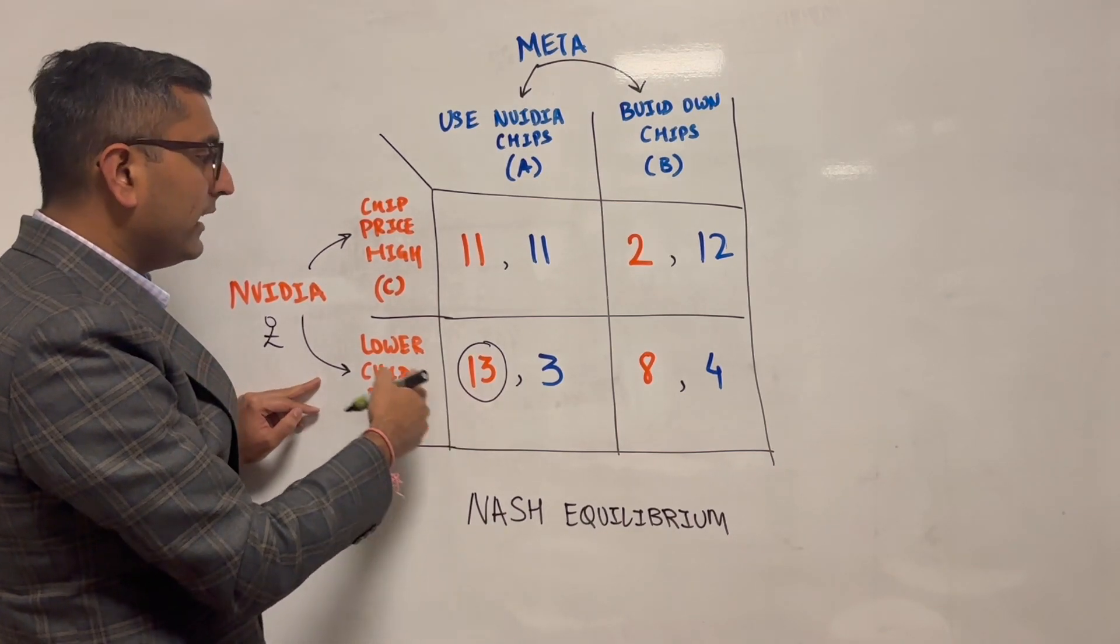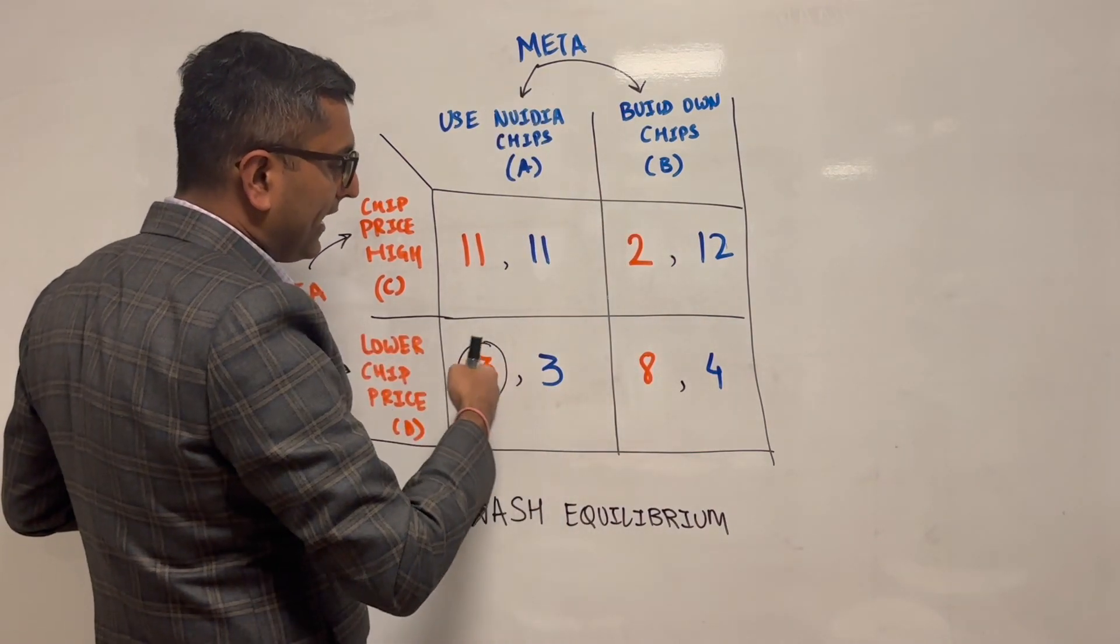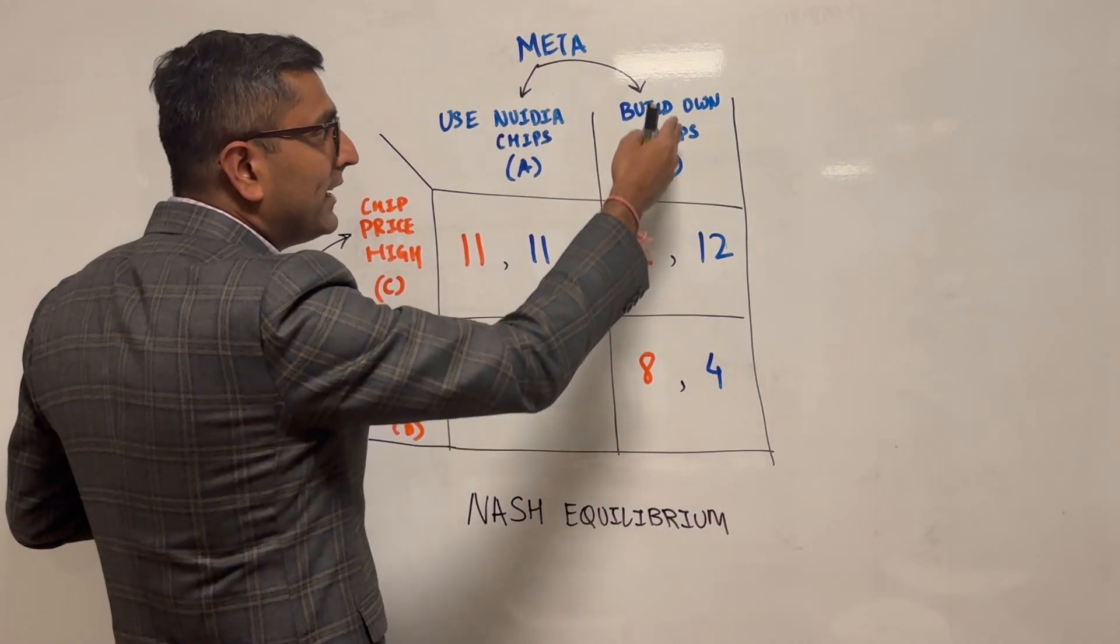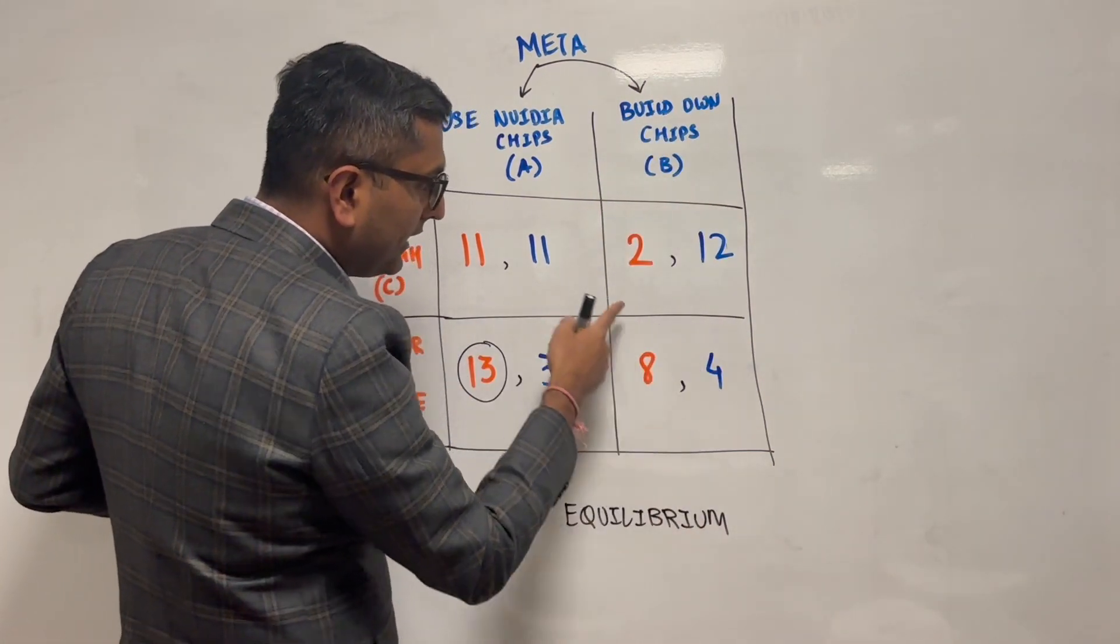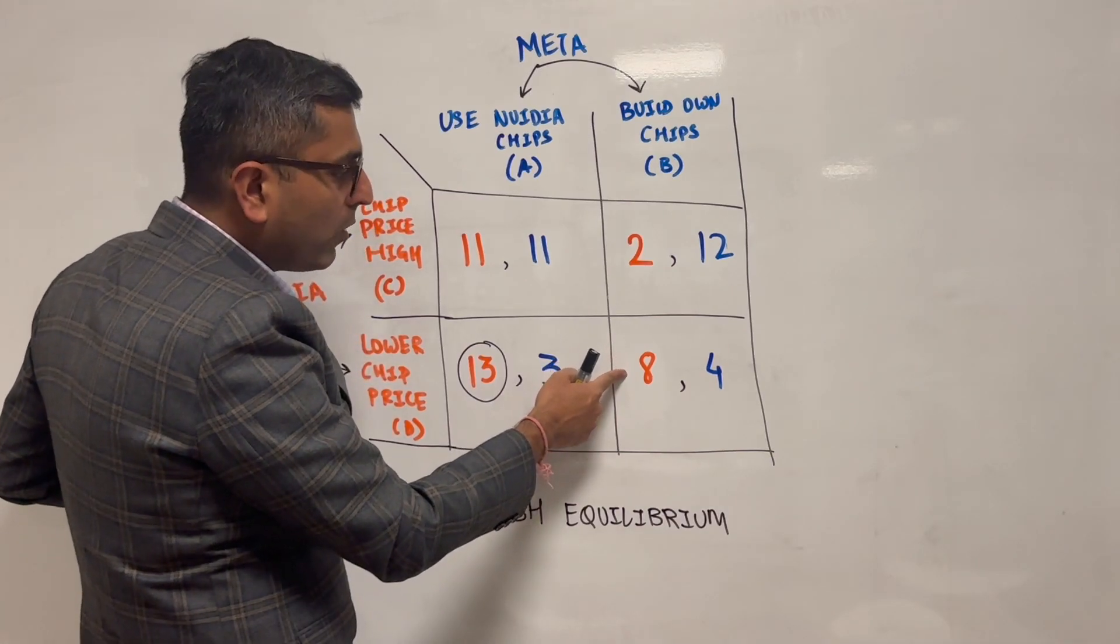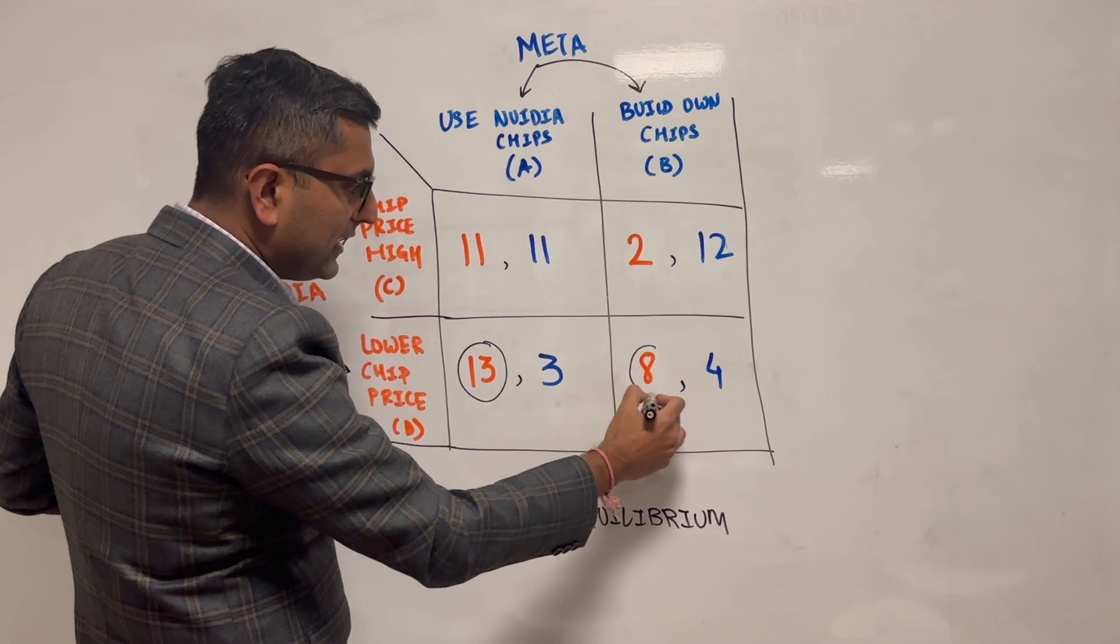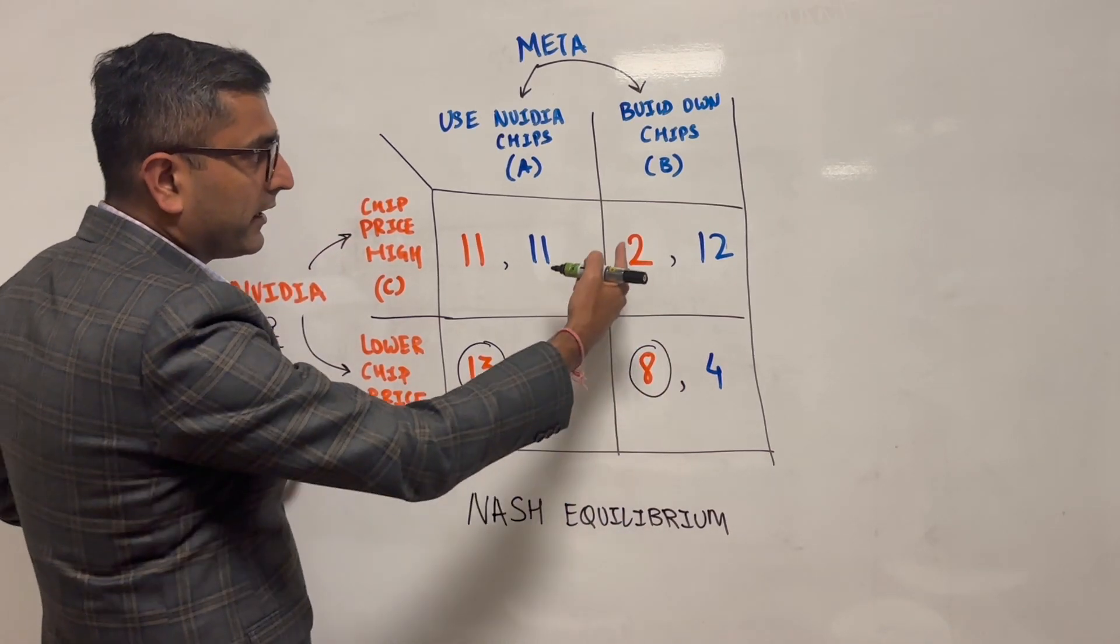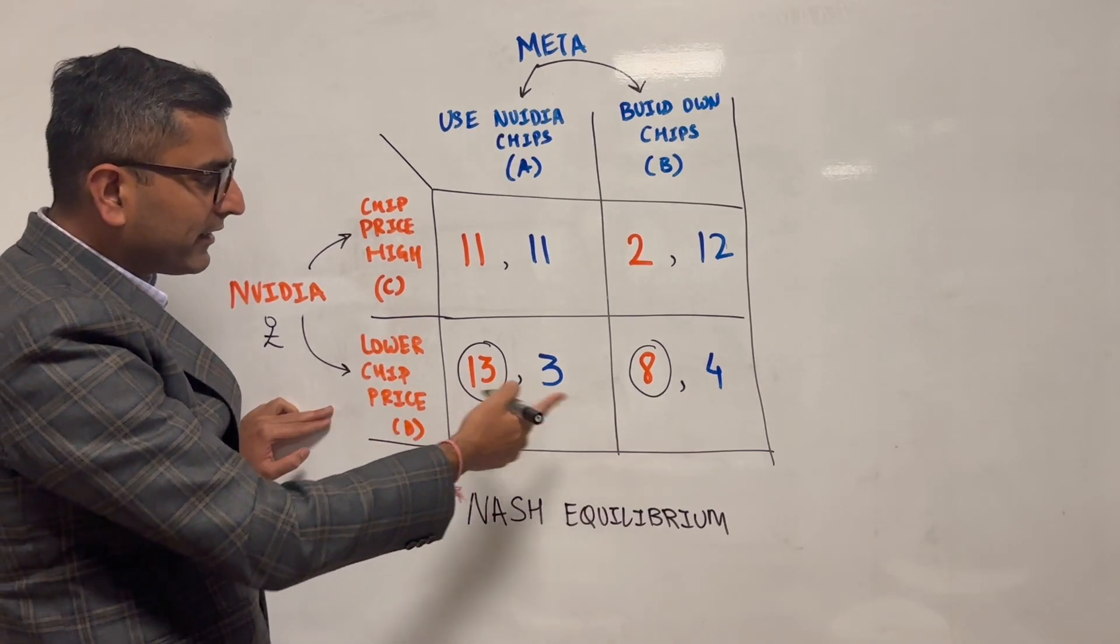Similarly, Nvidia's leadership will continue to say, I assumed choice A and I got this option. What if Meta did go with choice B? Then they would say, assume this to be true, then they'll compare the payoffs here. Oh, I'm getting a much better payoff again, according to choice D, if Meta is going to go down this path.